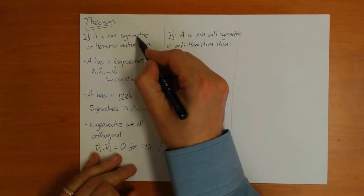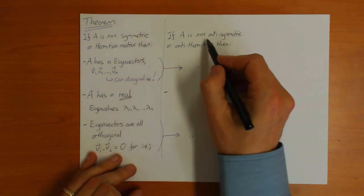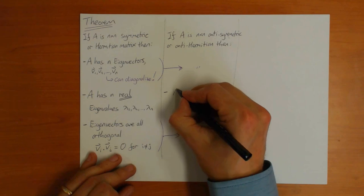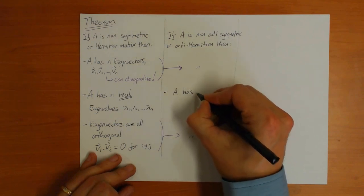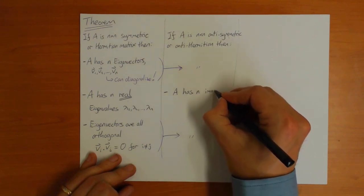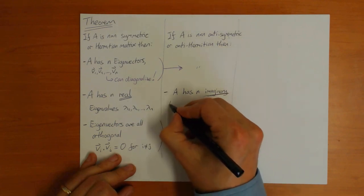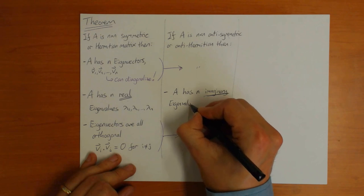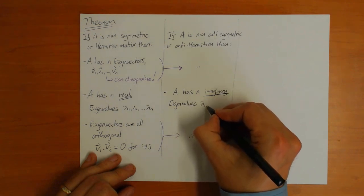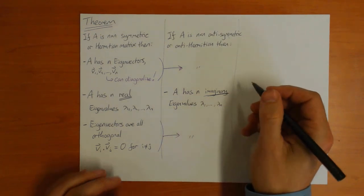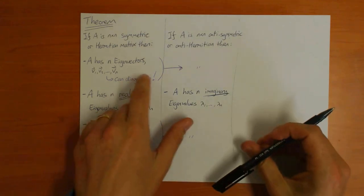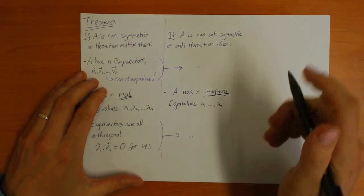The only part which changes is the second part. For a symmetric matrix, the eigenvalues are real. For an anti-symmetric matrix, the eigenvalues are imaginary. But again, importantly, you can always diagonalize.